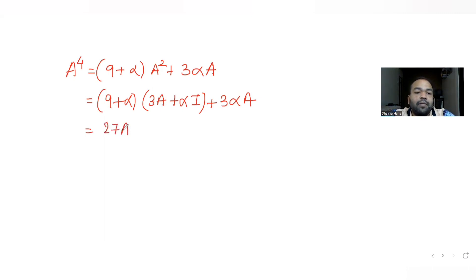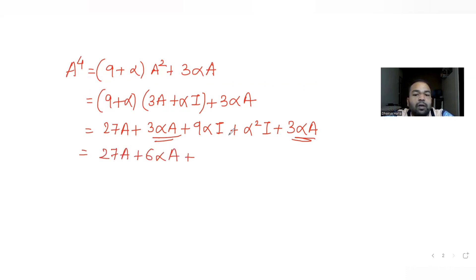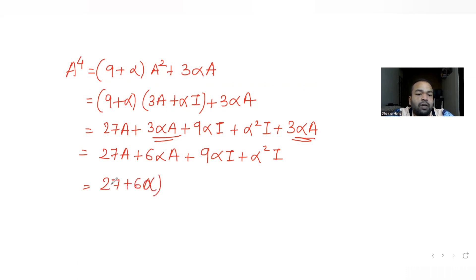Expanding: (9 + α)(3A + αI) + 3αA gives 27A + 9αI + 3αA + α²I + 3αA. Taking A common from all A terms: (27 + 6α)A, and taking I common from all I terms: (9α + α²)I. So A⁴ = (27 + 6α)A + (9α + α²)I.